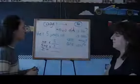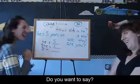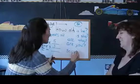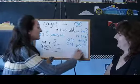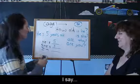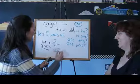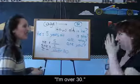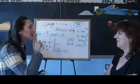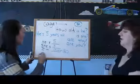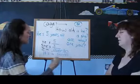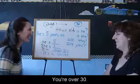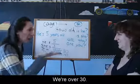Do you want to say that? Maybe it's a secret? Do you know secret? You don't have to say. Secret is shhh. How old are you? It's a secret. I say I'm over 30. My age is a secret. I would just say it's a secret. I'm over 30. You can say you're over 30. We're over 30.